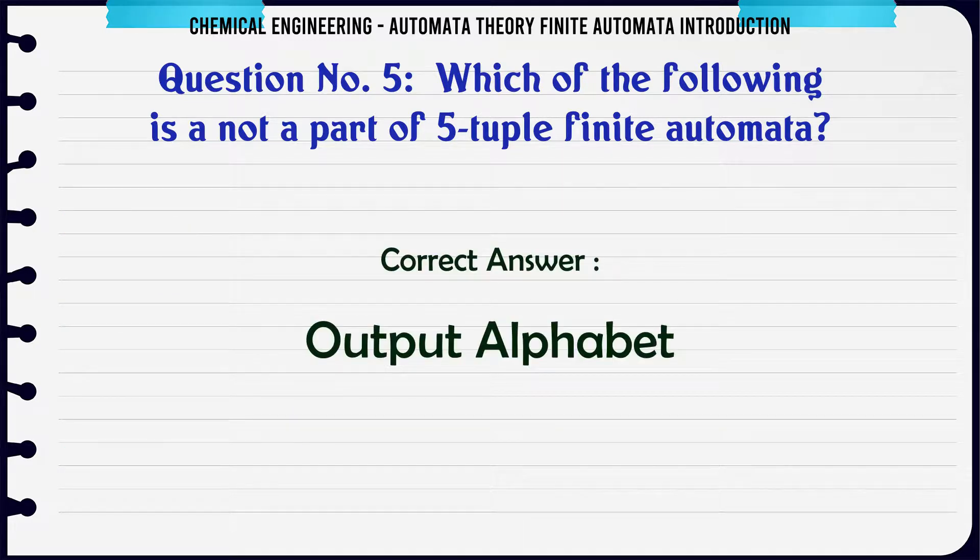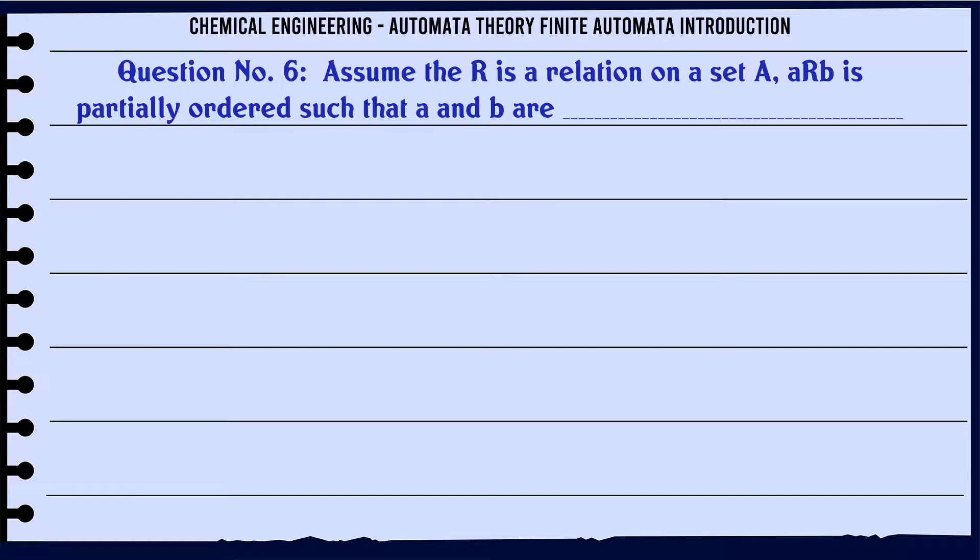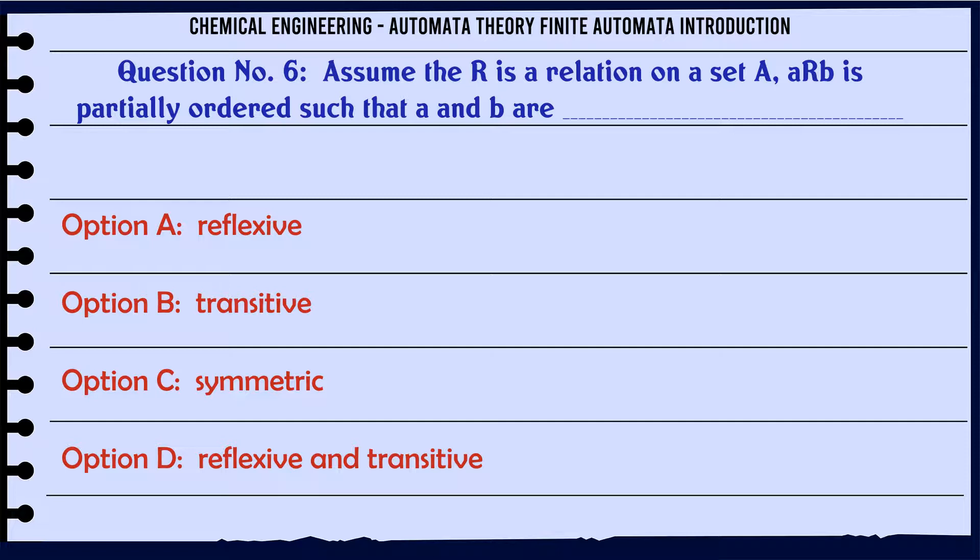Assume R is a relation on a set A, A R B is partially ordered such that A and B are: A: Reflexive, B: Transitive, C: Symmetric, D: Reflexive and transitive.